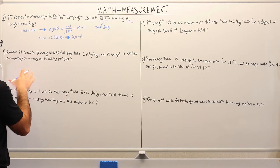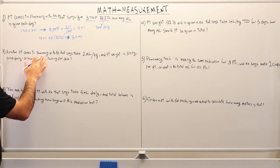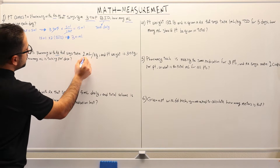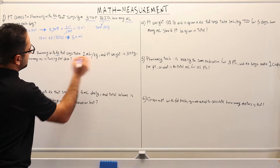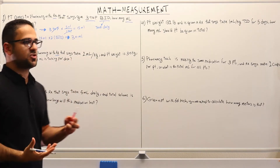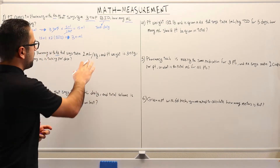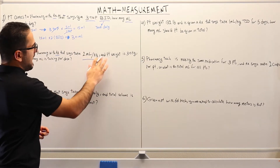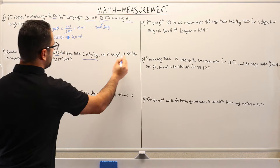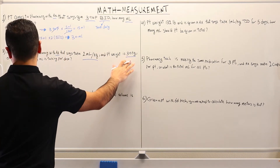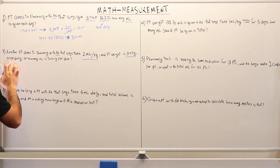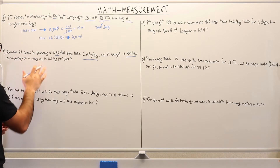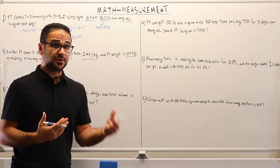Moving to example number two. Here we have another patient who comes to the pharmacy with a prescription that says take two milliliters per kilogram. So we're dosing this patient based on weight — for every one kilogram, two milliliters — and the patient's weight is 30 kilograms, given once daily. The question is asking how many milliliters is the patient taking per dose.